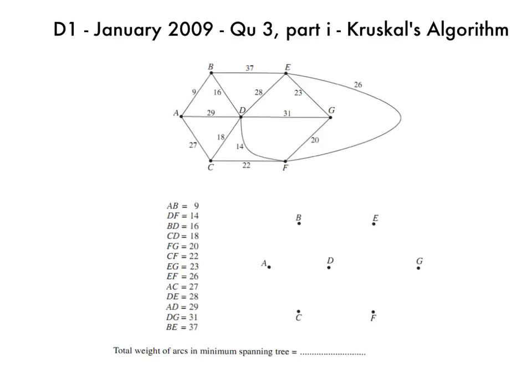Okay guys, this is the OCR D1 paper from January 2009, Question 3, Part 1, and this question is about the use of Kruskal's algorithm to find a minimum spanning tree.